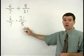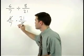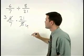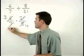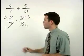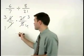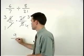6 and 8 reduce to 3 and 4, and 21 and 7 reduce to 3 and 1. Multiplying across the numerators and denominators, we have 9 fourths.